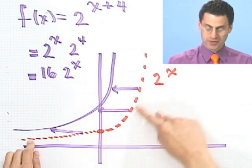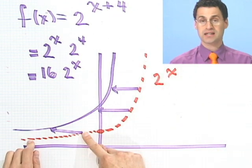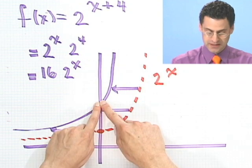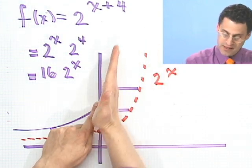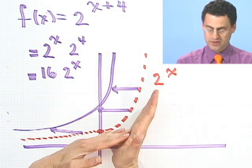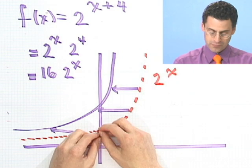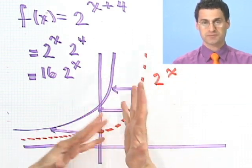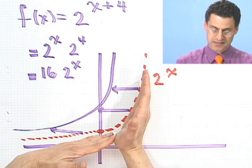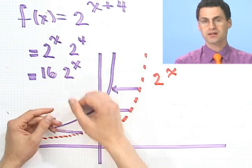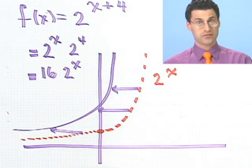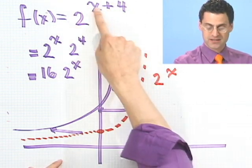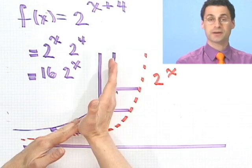So I could think about the graph by taking 2 to the x and multiplying it by 16. What does that do? It takes the point 1 and moves it up to 16, and then bends the curve upward — basically expanding it by multiplying by 16. But I think the easier way to think about it is just as a shift in x, 4 units this way.